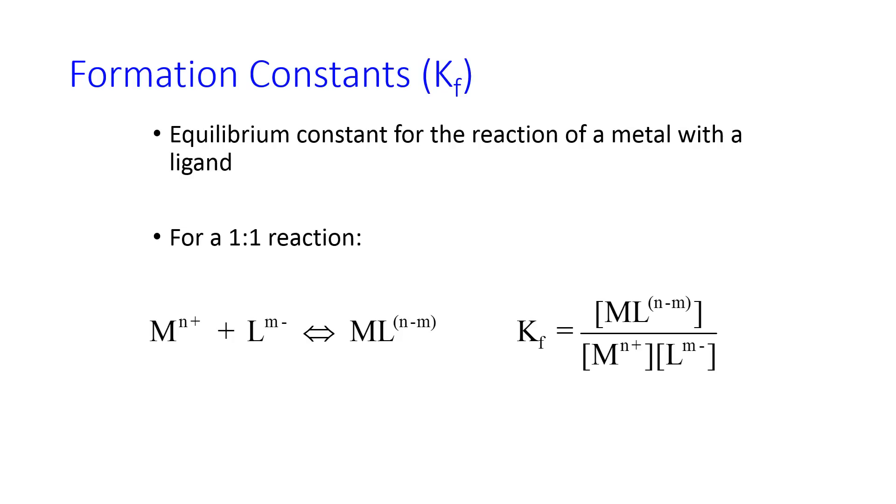I mentioned that the equilibrium constant for this reaction is called KF, the formation constant. For a one-to-one reaction, you see the equilibrium constant here. I specify one-to-one because there are no stoichiometric coefficients in there. But in general, this is defined the same way as any K, K-A or whatever, all the ones we've done before.